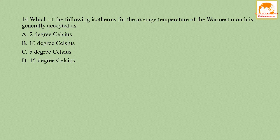Question number fourteen: which of the following isotherm for the average temperature of the warmest month is generally accepted? Option A - 2°C, option B - 10°C, option C - 5°C, option D - 15°C.